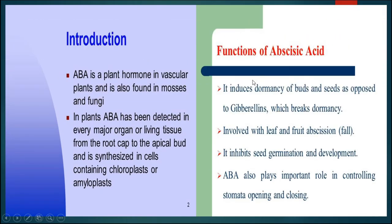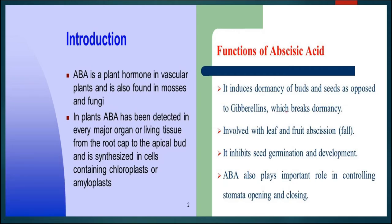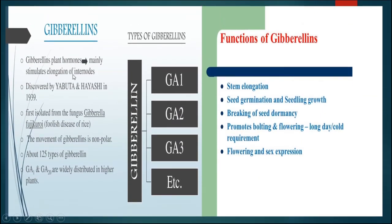ABA or abscisic acid is present in vascular plants, mosses, fungi, etc. It is responsible for various activities like closing of stomata, inhibiting seed germination and development, and controlling the process of dormancy. It also controls abscission of fruit and leaf — that is, fruit fall and leaf fall. For all these reasons, ABA is known as a plant growth inhibitor.